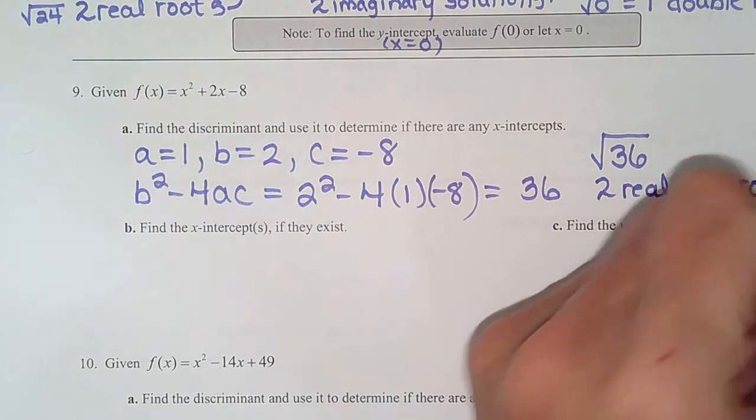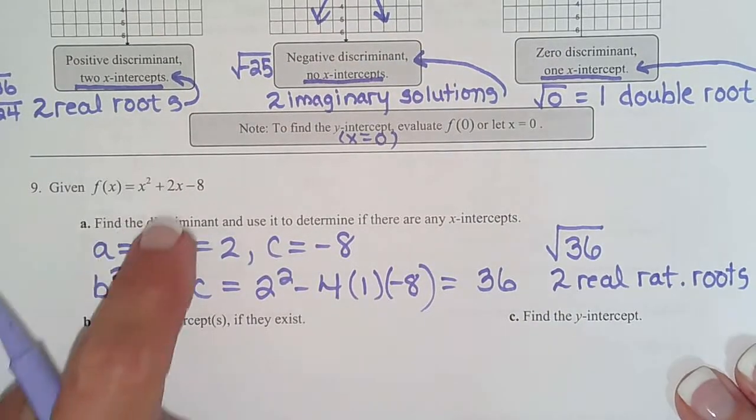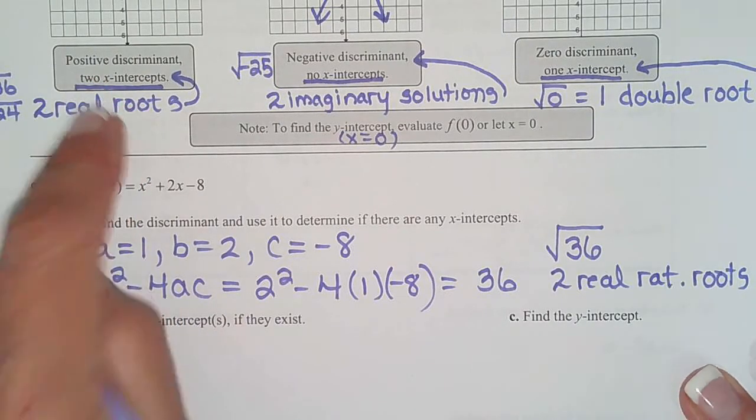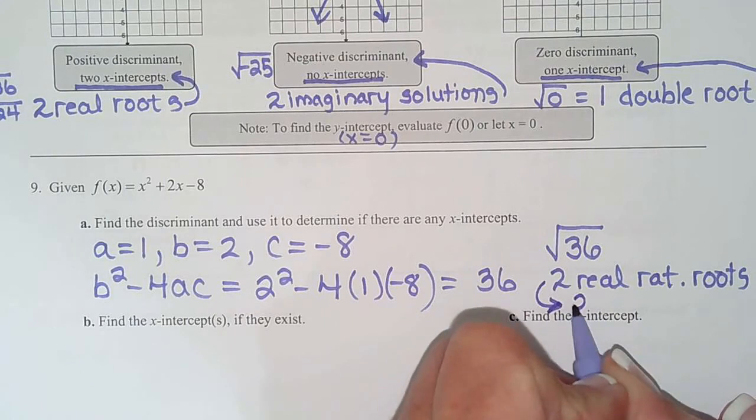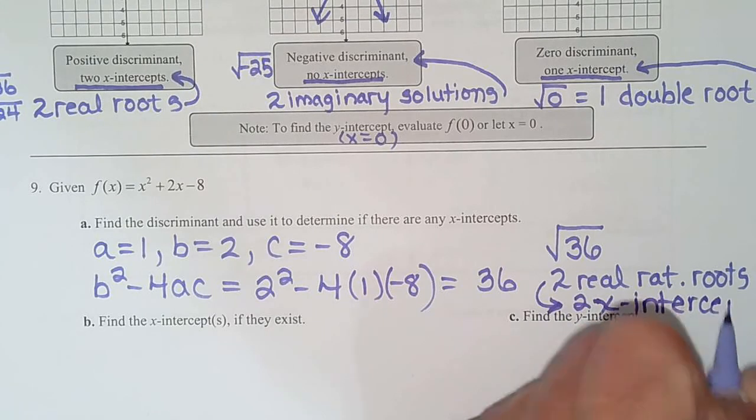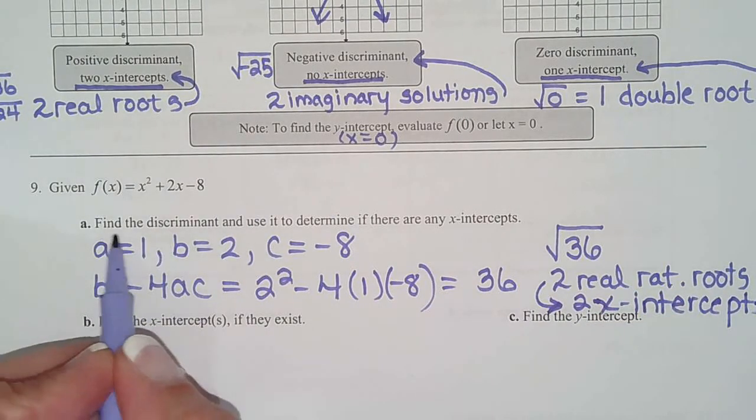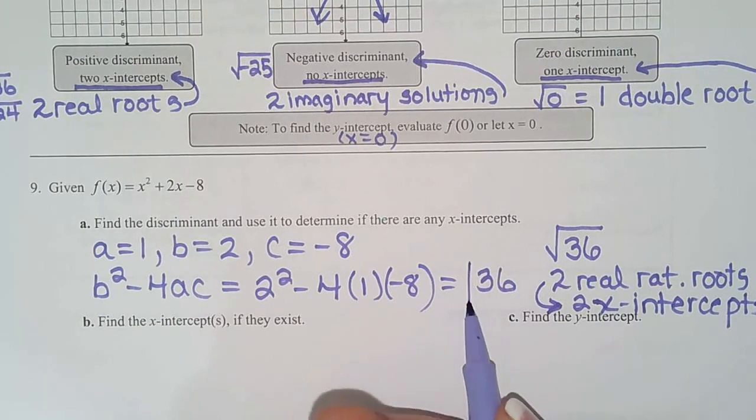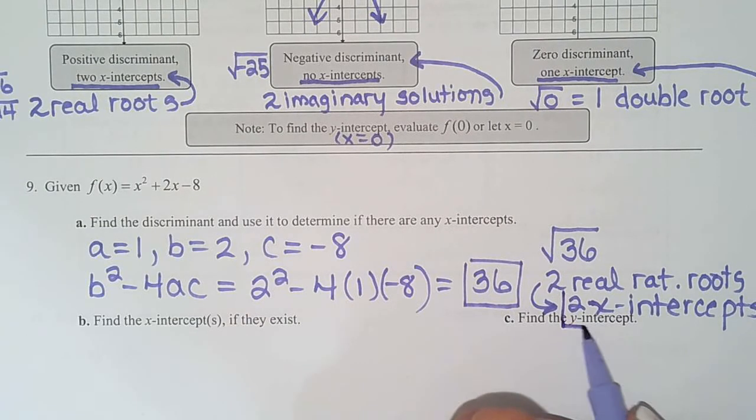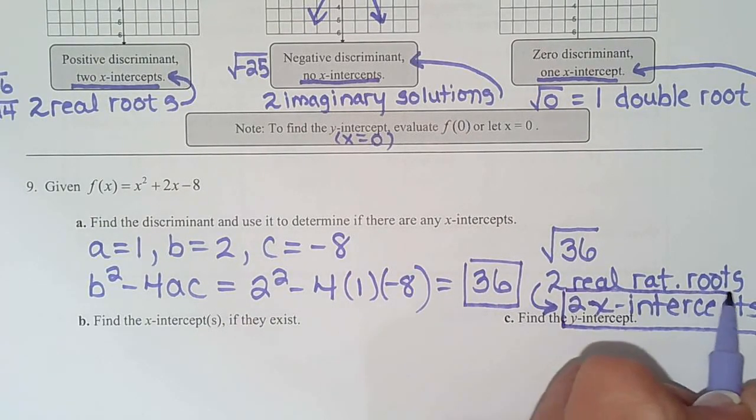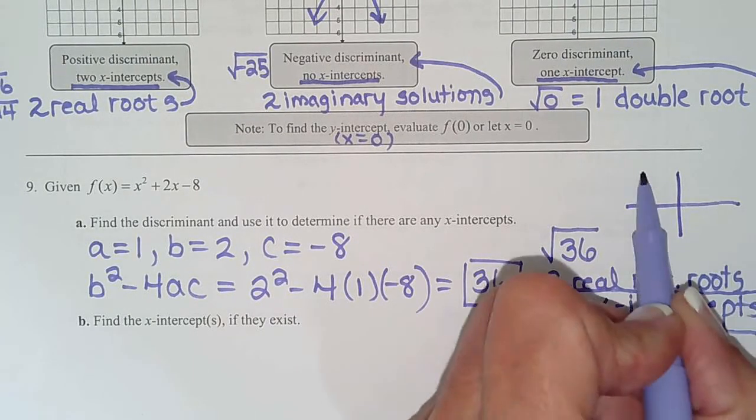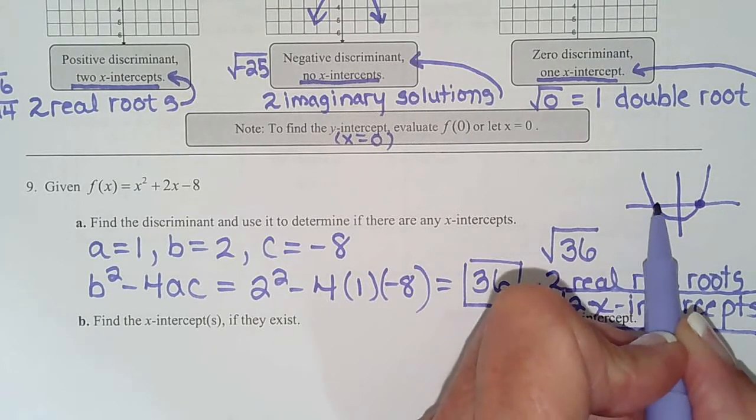But what that means from the chart above, 2 real rational roots translates to 2 x-intercepts. And that's what the question is asking, I believe. Let's look and see. Find the discriminant. So there was the discriminant. That was step 1. Use it to determine if there are any x-intercepts. Yes, 2 real roots mean 2 x-intercepts. So we know this graph is going to cup up and it's going to cross the x-axis in 2 locations.